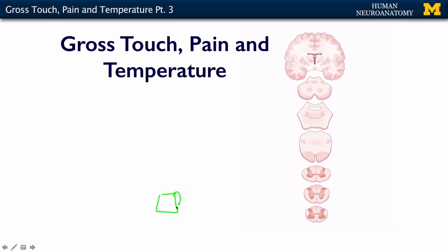Here's a hot mug of coffee, and here's your hand. Hot, cold, temperature — whatever it is, pain — if this is really hot, there are receptors in your skin that are connected to a dorsal root ganglion neuron.